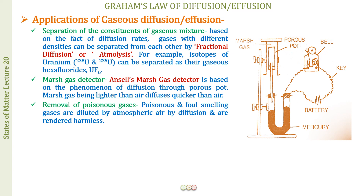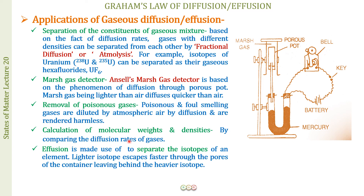Other applications: to remove poisonous or foul-smelling gases, open windows so the gas mixes with atmospheric air by diffusion and becomes harmless — for example, if a kitchen gas cylinder leaks. Also, if we need to calculate molecular weights or densities of gases, we can measure their rates of diffusion and use the derived equations to calculate them. In effusion, the lighter isotope escapes faster through the pore, leaving behind the heavier isotope.